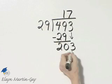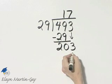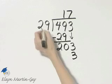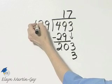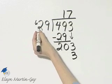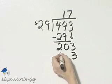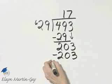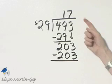7 times 9 is 63. Write down the 3, carry the 6. 7 times 2 is 14. 14 plus 6 is 20. No remainder.